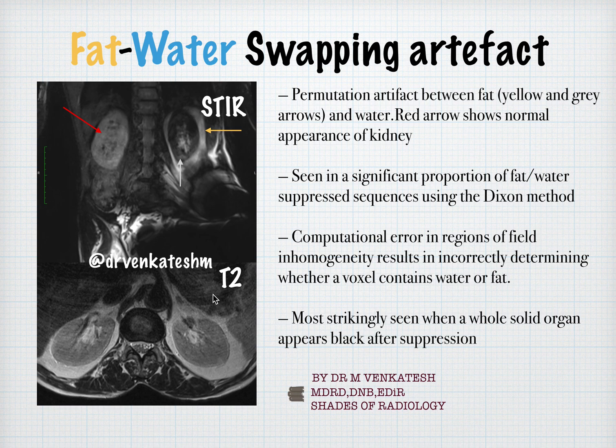The same patient's axial T2-weighted image shows normal signal intensity of both kidneys. So what is this artifact? This is called the fat water swapping artifact. This is a permutation artifact between fat and water, seen significantly in fat water suppressed sequences using the Dixon method. It is a computational error in regions of field inhomogeneity — when there is an inhomogeneous magnetic field, it results in incorrectly determining whether a voxel contains water or fat.